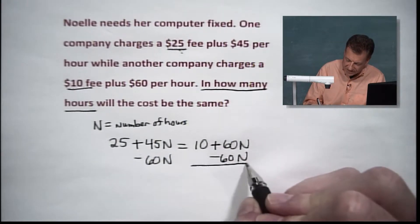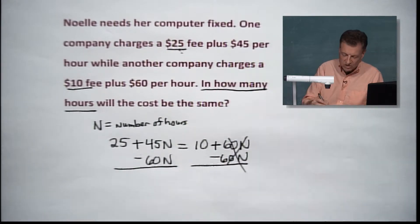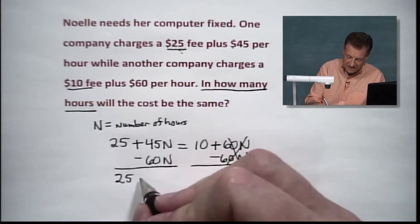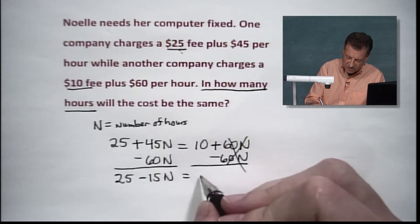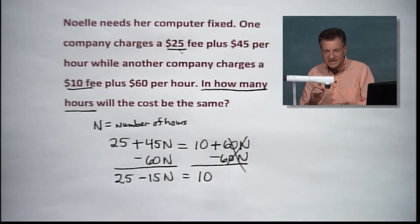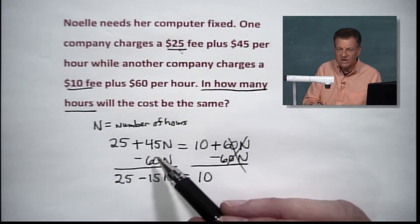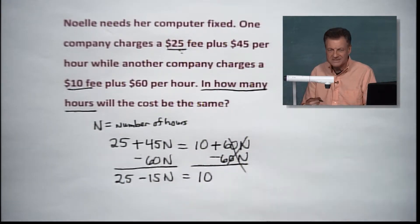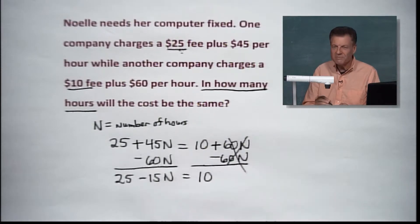And what just happened was, things got a little bit easier now. Say goodbye to those 60Ns. You've got 25 minus 15N on this side, equaling to 10. Now, once again, when we move things to the other side of the equation, we've got to put the opposite sign to them. In other words, here we were hooked in by addition. We've got to remove it by subtraction. Got to remember that.